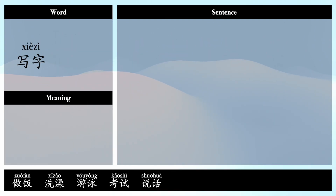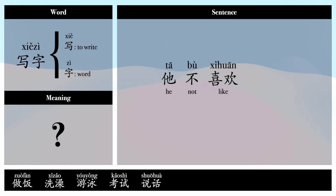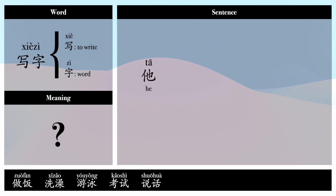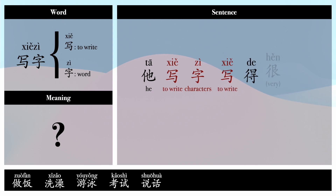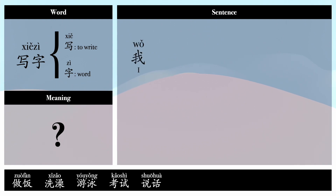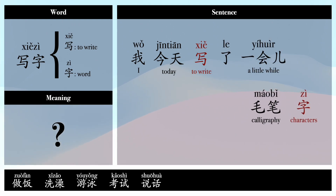写字 — 写: to write, 字: word/character. Example sentences: 他不喜欢写字。(He doesn't like to write.) 他写字写得很慢。(He writes very slowly.) 我今天写了一会儿毛笔字。(I practiced calligraphy with a brush pen for a while today.)